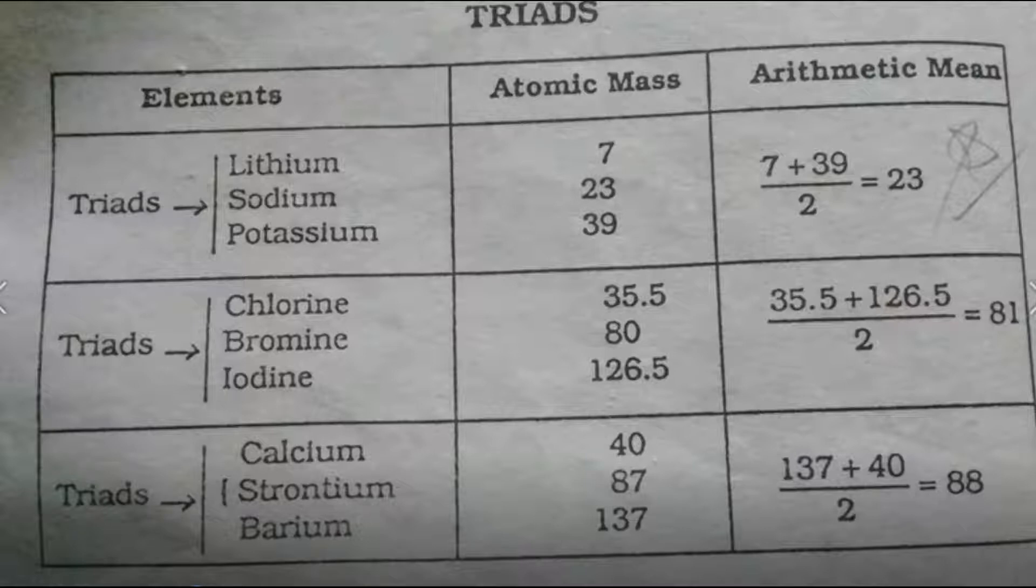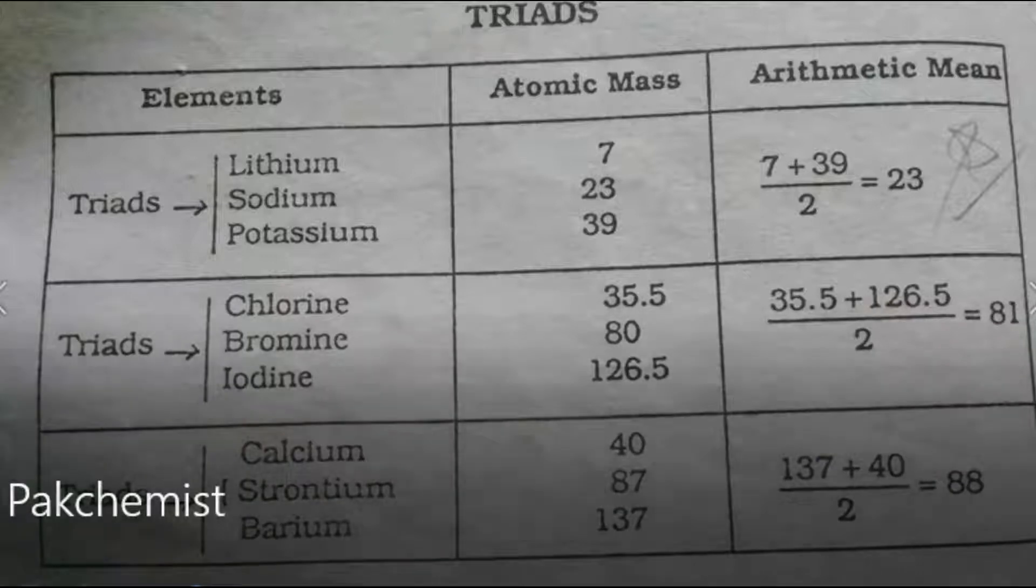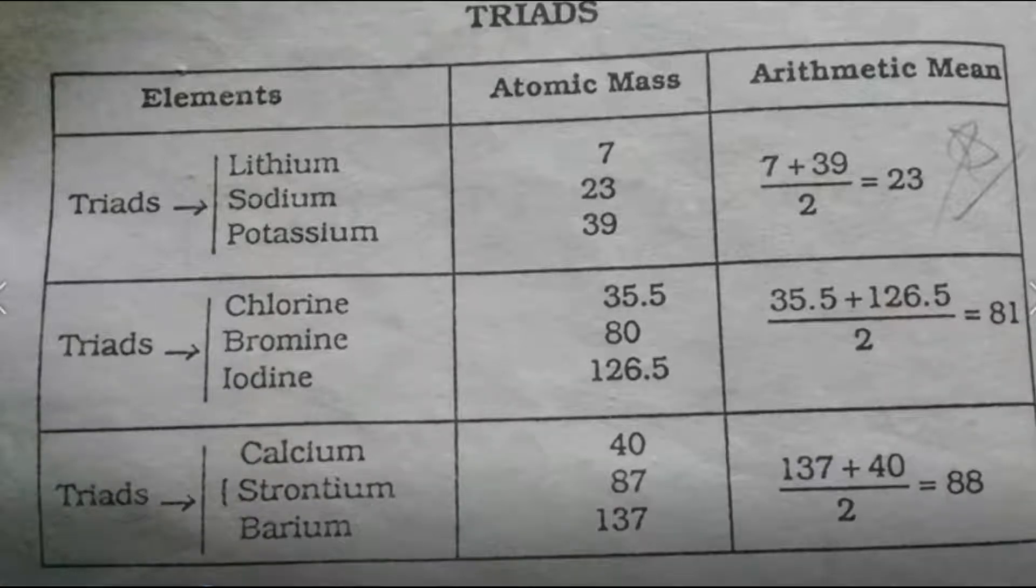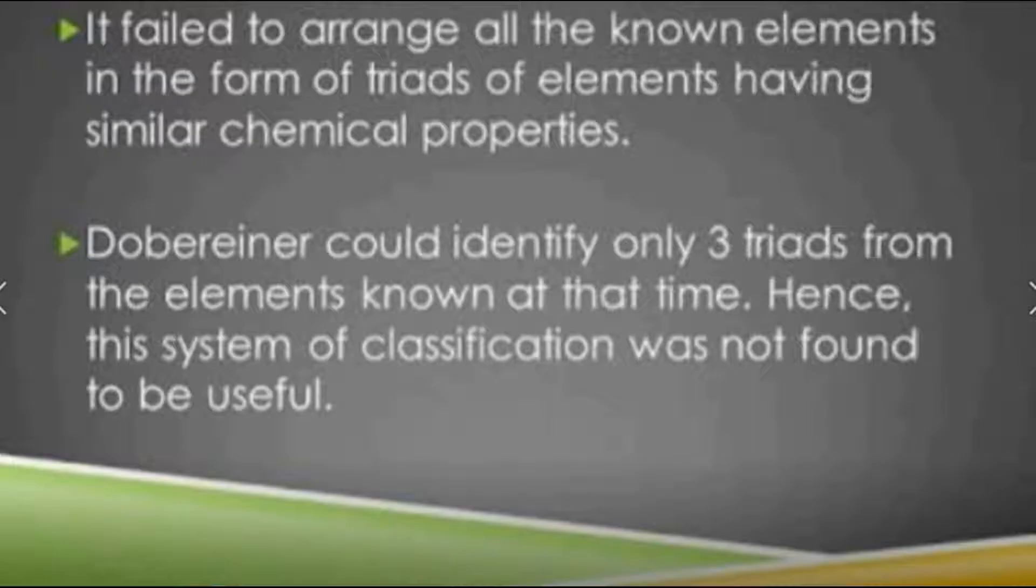But this rule failed. Why did it fail? The first reason was only triads of elements could be arranged, and he identified only 3 triads. This is why this classification system was not useful and failed.